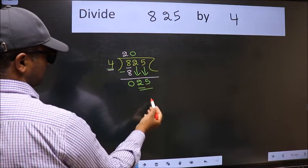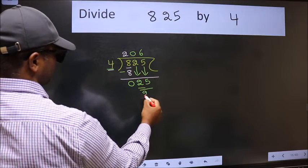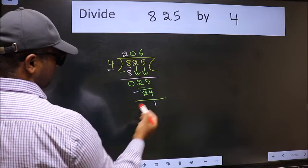Now, 25. A number close to 25 in the 4 table is 4 times 6, 24. Now we should subtract. We get 1.